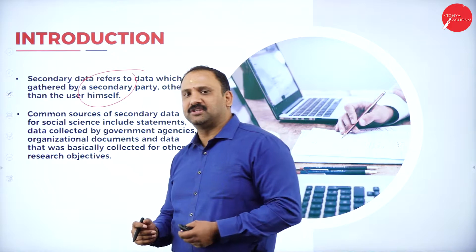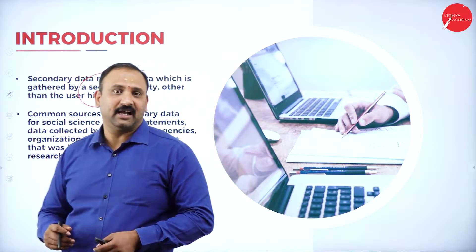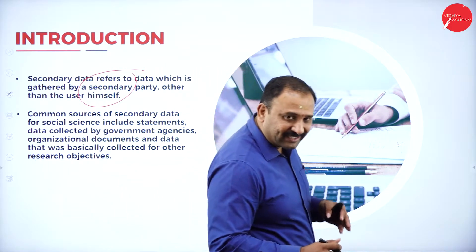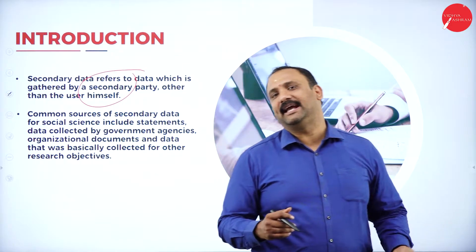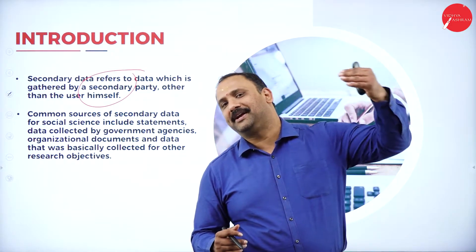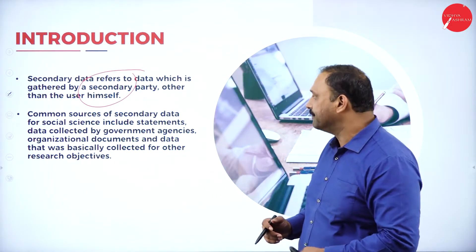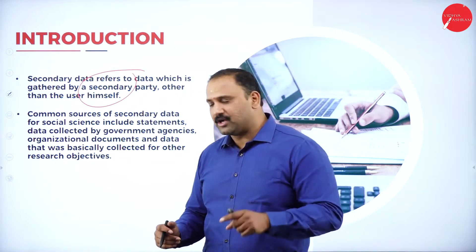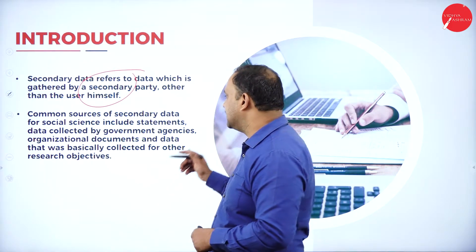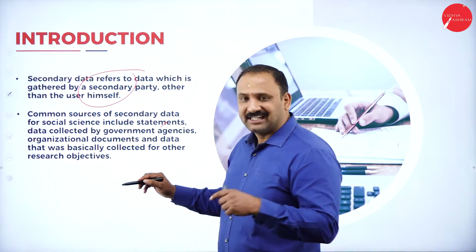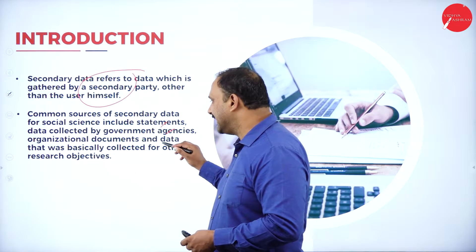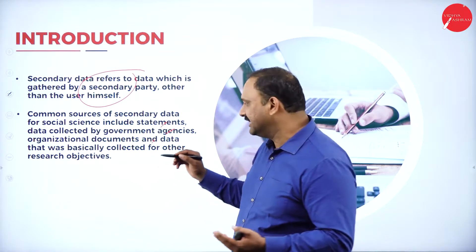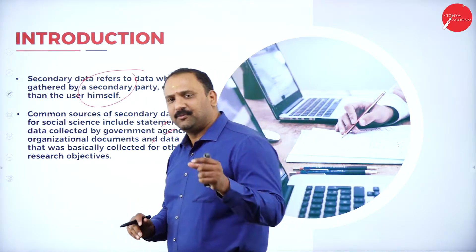We have understood this context clearly — it is not the user, but somebody else who is collecting and working on this data. The common sources of secondary data for social science include statements, data collected by government agencies, organizational documents, and other factors.